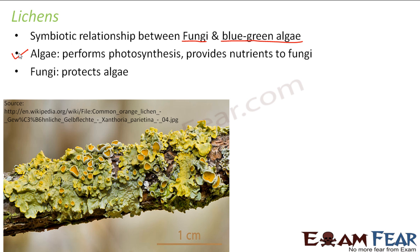In turn, the fungi give protection and shelter to the algae, providing a place to live and protecting them from external issues. If you look at the picture, lichens appear as green or colored patches on the bark of trees. The fungi protect the algae during hot sun so they do not dry out, shading them from sunlight by enclosing them within their body.